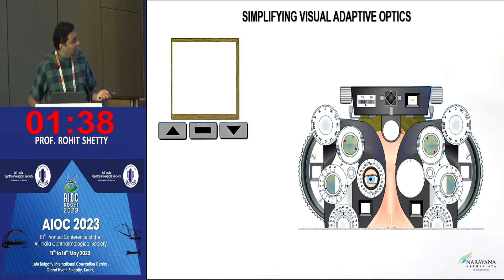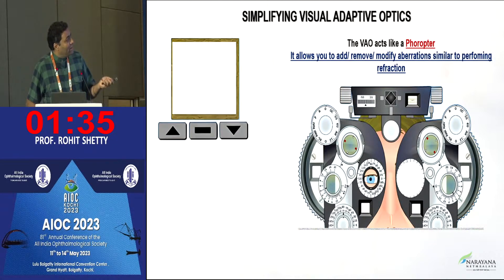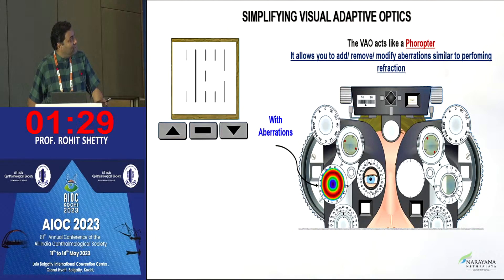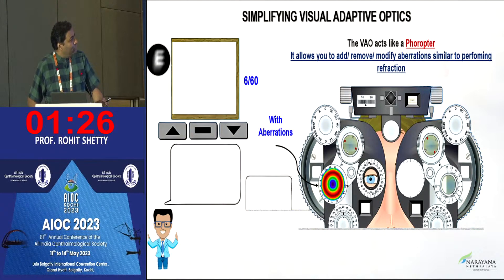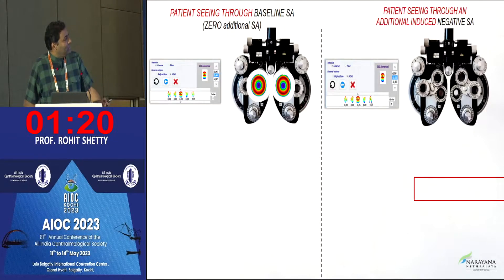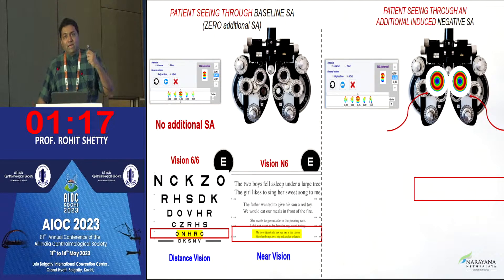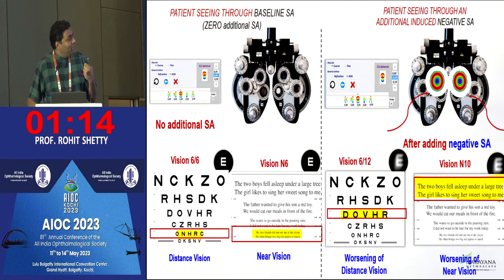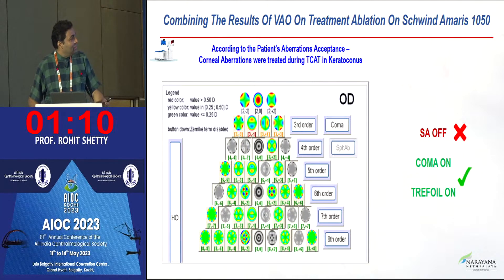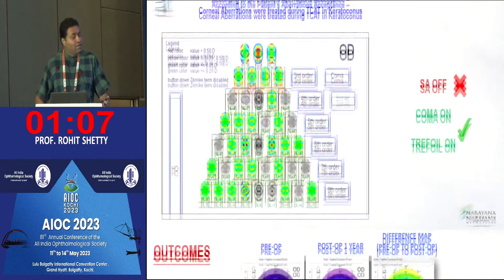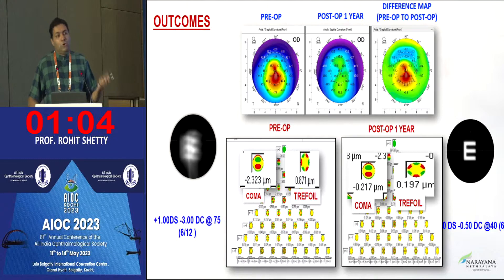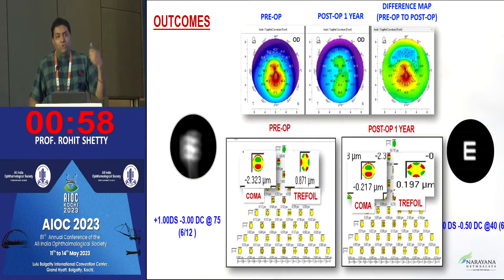Moving toward true customization, we are working on adaptive optics. We are trying to use adaptive optics to see if we can pick up the aberrations which truly need to be corrected versus those which don't. This is a work in progress — we have Dr. Reshma and Dr. Bavia both working on this. We can induce aberrations, we can remove aberrations like a phoropter, and that is what I can feed into the machine. It's a laborious process, but it's the way to go. This example clearly explains how beautifully keratoconus can be corrected if you don't correct unwanted things.